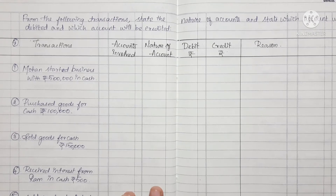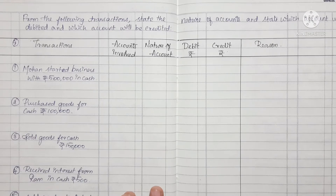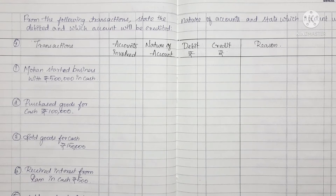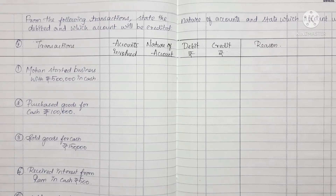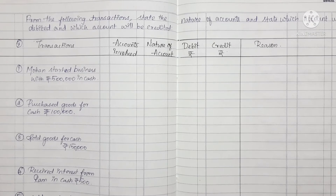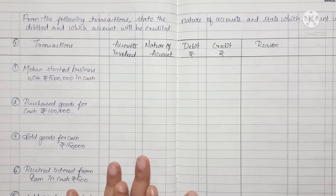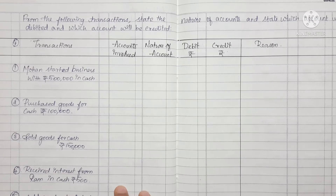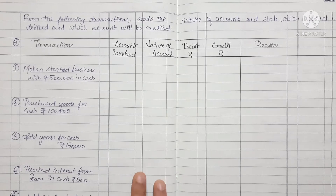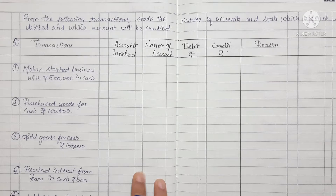Hi friends, welcome back to my channel Savvy Learner. In this video we are going to talk about CBC syllabus 11th accountants. In the last video we talked about traditional classifications — there are two types of classification of accounts. If you are subscribed to our channel, click the bell icon so you don't miss any videos.